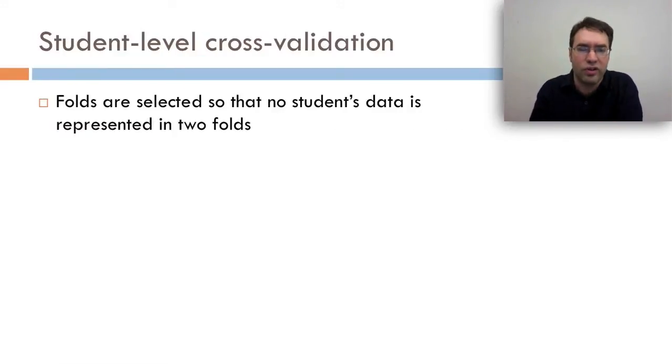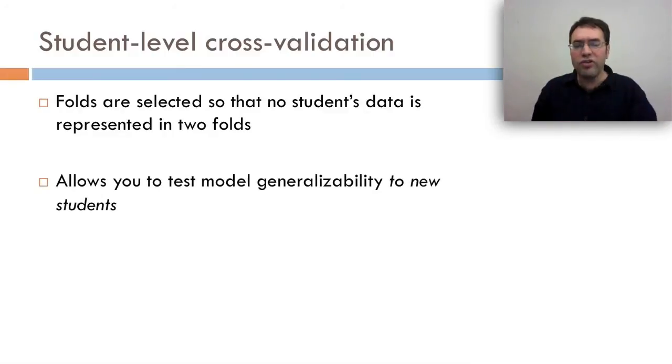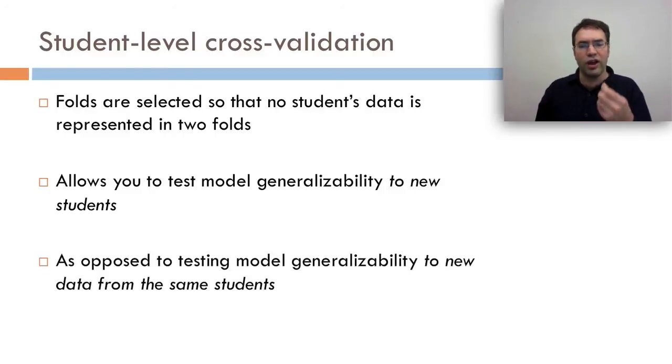Another variant is student-level cross-validation, where folds are selected so that no student's data is represented in two folds. So in other words, a student is at any time either in a training fold or in a test fold. This allows you to test model generalizability to new students, which is often something we want. By contrast, flat cross-validation, or even stratified cross-validation, can just test model generalizability to new data from the same students. Think about it. Do you want to build a model that'll work on new data from the same kids you have data on? Or do you want to build a model that'll work for entirely new kids? Usually, we want to build models for entirely new kids, and for this purpose, student-level cross-validation is important to do.